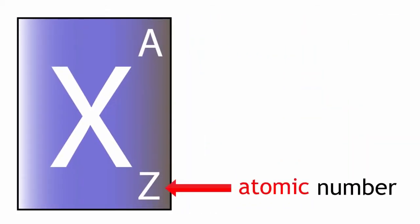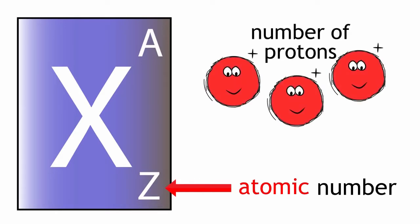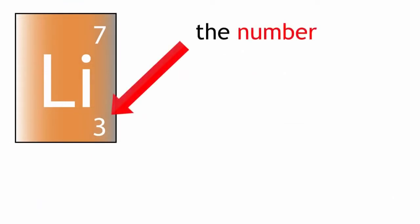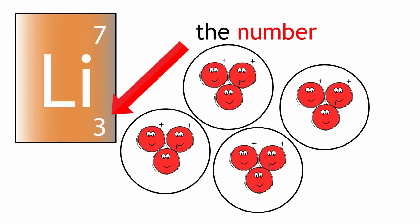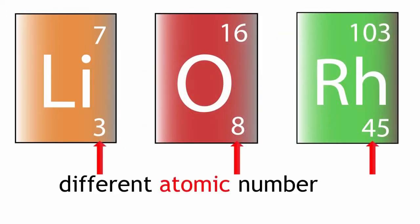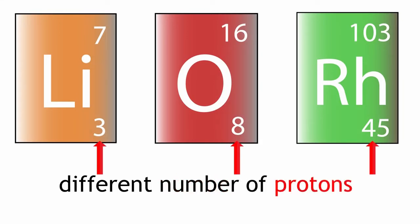The atomic number has a symbol Z. This number tells you how many protons are in one atom of an element. The number is always the same for all atoms of a particular element. Atoms of different elements have a different atomic number, meaning they have a different number of protons.